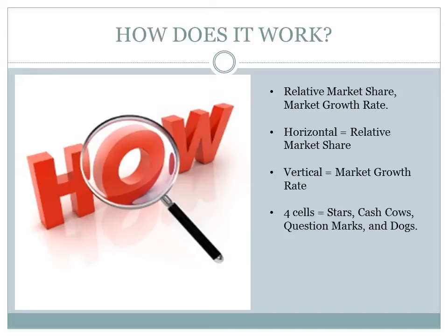Resources are allocated to the business units according to their situation on the grid. The four cells of the matrix have been called Stars, Cash Cows, Question Marks, and Dogs. Each of these cells represents a particular type of business.